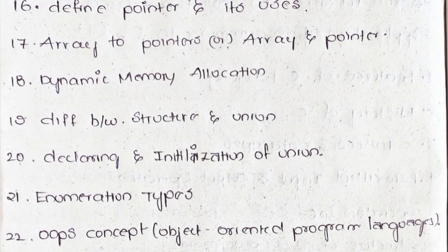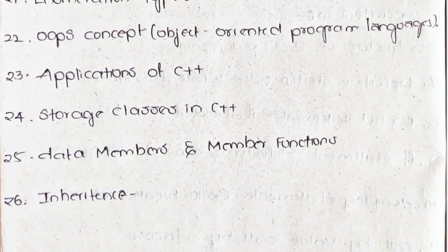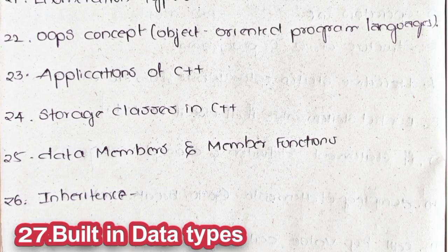Twenty-First: Enumeration Types. Twenty-Second: OOPs Concept and Object-Oriented Programming Languages. Twenty-Third: Applications of C++. Twenty-Fourth: Storage Classes in C++. Twenty-Fifth: Data Member and Member Functions. Twenty-Sixth: Inheritance and Its Types.